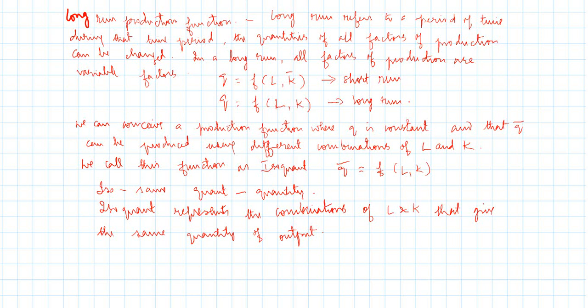In this lecture we are going to see the long run production function. In the previous lecture we have seen the short run production function and the difference between long run and short run, where the short run is a period of time during which you cannot change at least one factor of production, and the long run is a period during which you can change all factors of production.